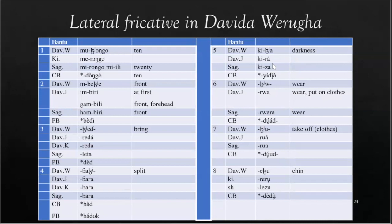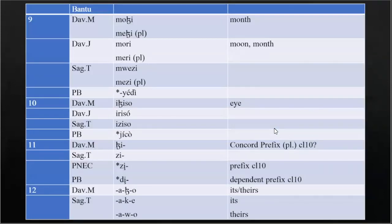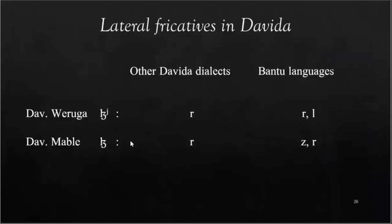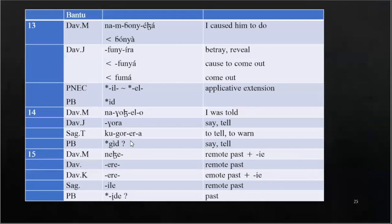In the second part, we have the same kind of pattern but for Sagala. Sometimes they have Za, as we can see in the word for darkness: Kiza. Common Bantu Da. Here are more examples — interestingly, here it's Gel, even though Da is not expected in Proto-Bantu. More examples for Davida Verruga. In Josa it is Ra, in Davida Mbale we have the lateral fricative. They even went into functional words where I was surprised to see them.